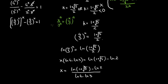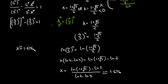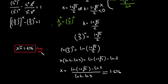When you compute the values of these natural logs, x comes out to approximately 1.676. So the final answer is x approximately equals 1.676. I hope you liked this video. Thanks for watching.